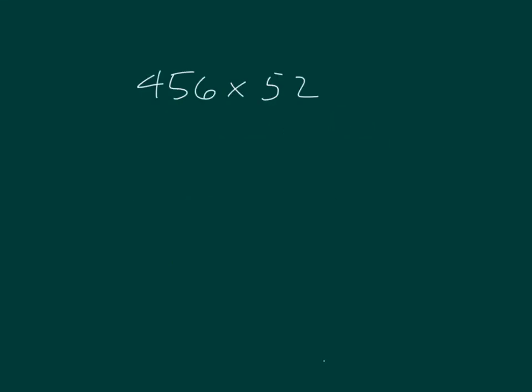Here I have the problem 456 times 52. I can go ahead and round each of those. 456 to the nearest 100 is 500, and then 52 is close to 50.